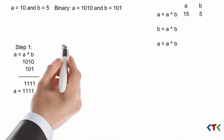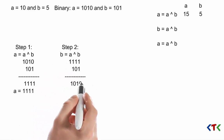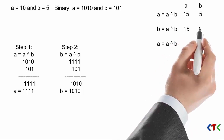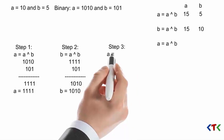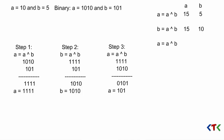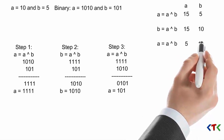Step 2: b equals a XOR b. With a as 1111 and b as 0101, we get 1010, which is 10 in decimal. So b equals 10. Step 3: a equals a XOR b. We get 0101, which is 5. So a equals 5, and b remains 10. The swap is complete.